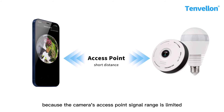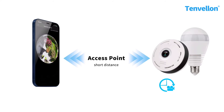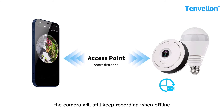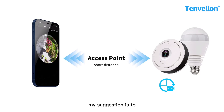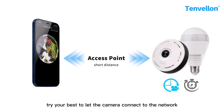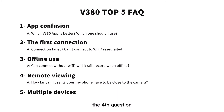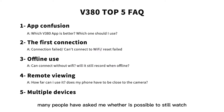Because the camera's access point signal range is limited, it can only be used at short range. When you are far away from the camera, the signal connection will be interrupted and you will not be able to connect. When you return to the area and reconnect to the access point, you can resume control. The camera will keep recording when offline, but you cannot play back the video remotely. My suggestion is to try your best to let the camera connect to the network — if the Wi-Fi signal range is insufficient, you can consider using a network repeater.